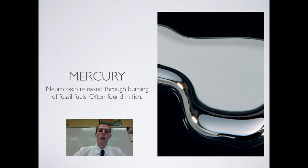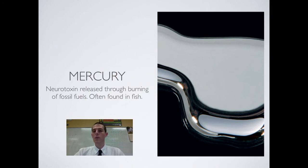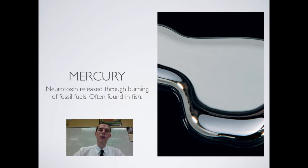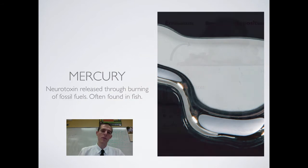Mercury can also make it into the environment through the mining process — it can be used in extracting gold from rock and sediment. So know that mercury is found in the environment through mining, but also, and most frequently, through the burning of fossil fuels.